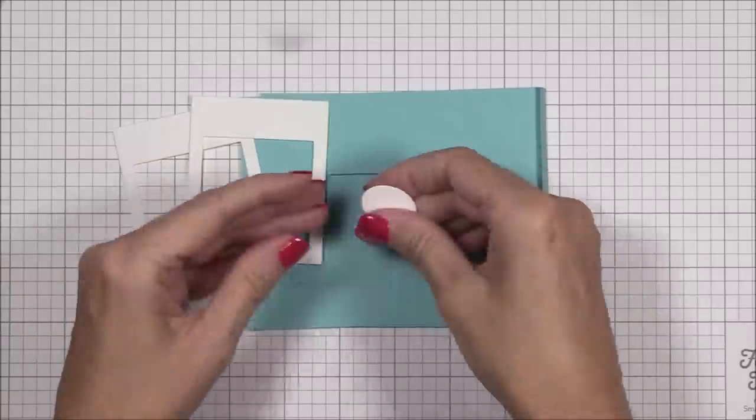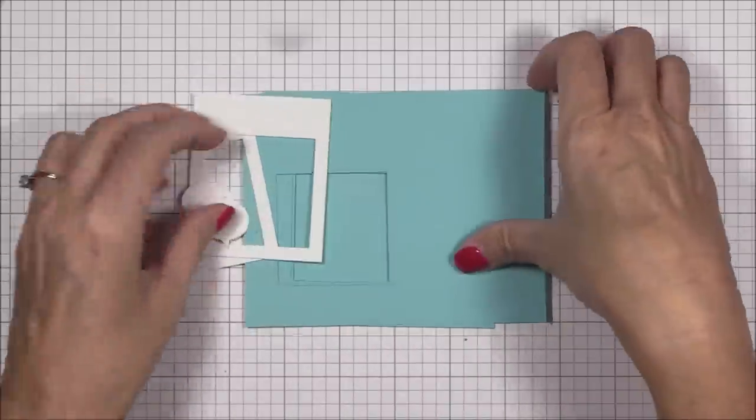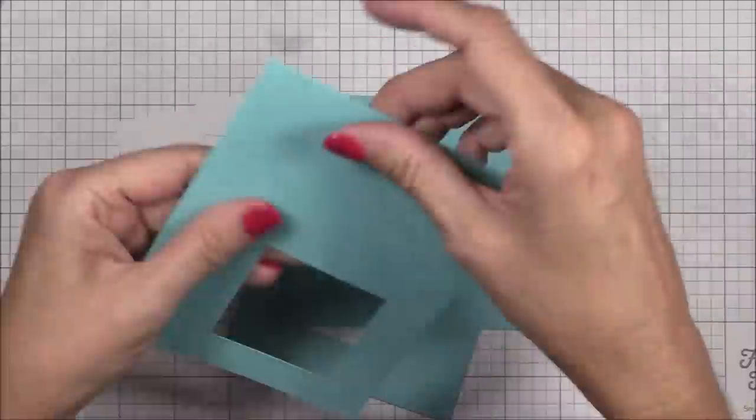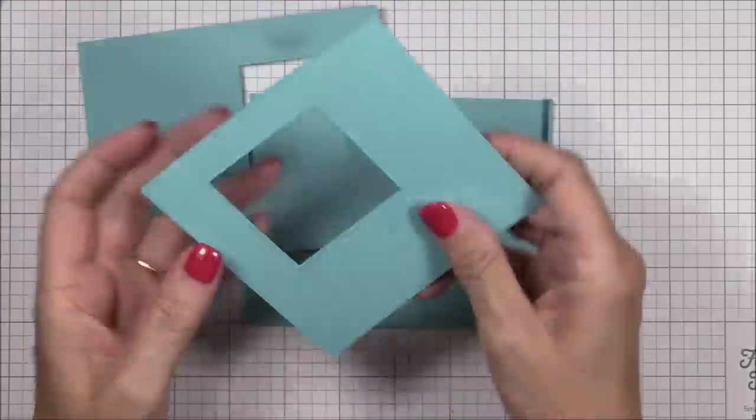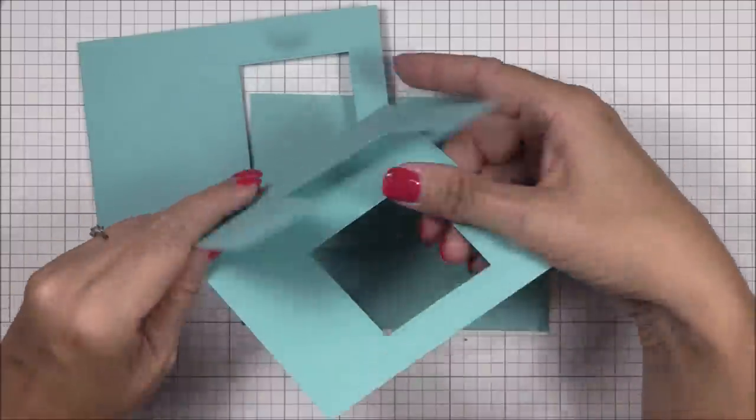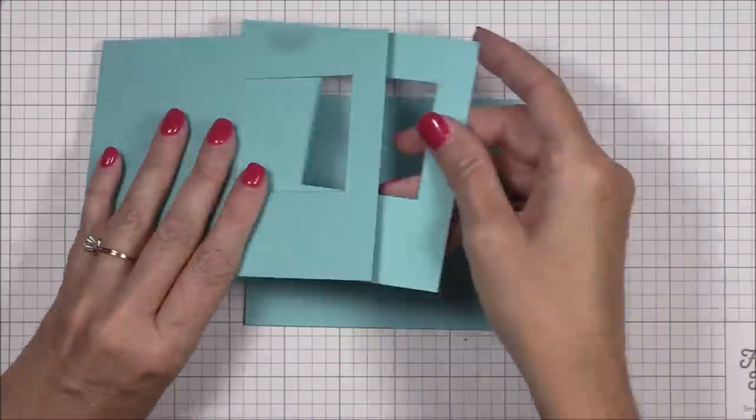Off camera, I also cut two of the Polaroid shaker frames from smooth white cardstock and two speech bubbles using the peekaboo wheel dynamics, also from smooth white cardstock. And now I think we're ready to start assembling our card.